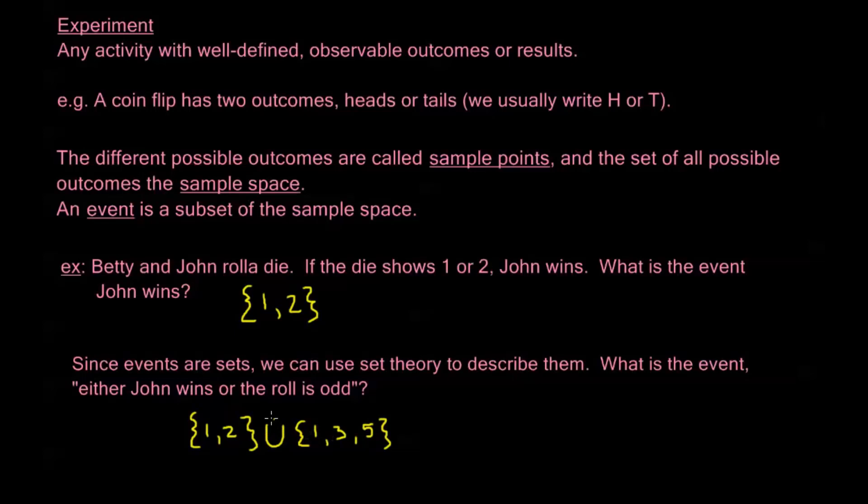If an element's either here or it's here, that's the union of these two sets. So the event that either John wins or the roll is odd is going to be the union, which is {1, 2, 3, 5}. Again, fairly intuitive, but this gives us an idea of what we mean when we use all of this terminology in practice.